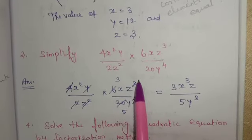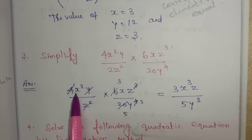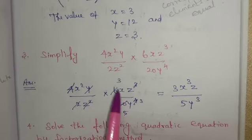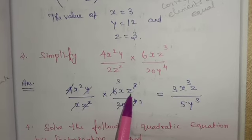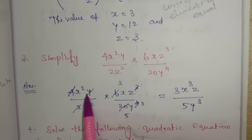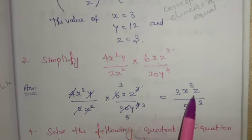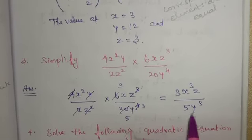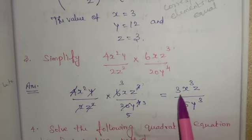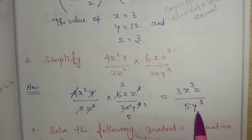3 X² times X gives 3 X³ Z by 5 Y³. Therefore, the answer is 3X³Z by 5Y³.